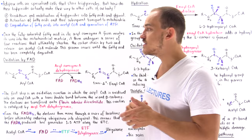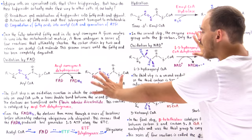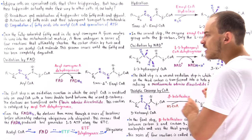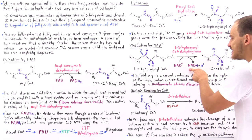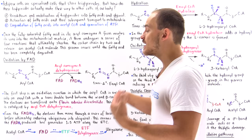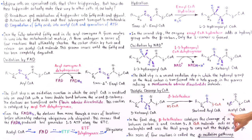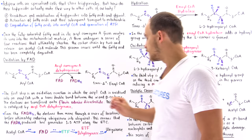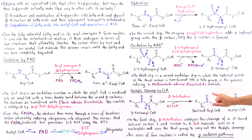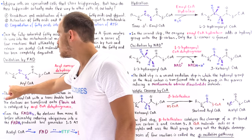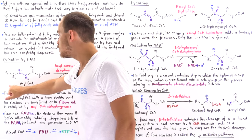Each complete round of the four-step beta-oxidation process generates one FADH2 molecule, one NADH molecule, and one acetyl coenzyme A. The FADH2 and NADH enter the electron transport chain to help generate ATP, as will be discussed in the next lecture. The resulting acyl coenzyme A chain is shortened by two carbons — if the original contained N carbon atoms, the product contains N minus 2 carbon atoms — and the cycle begins again.